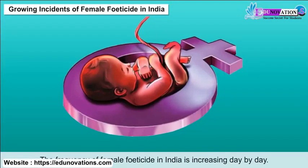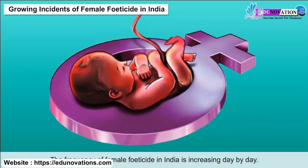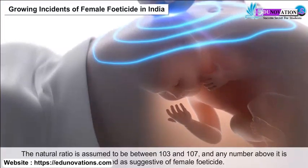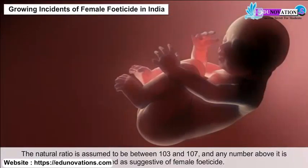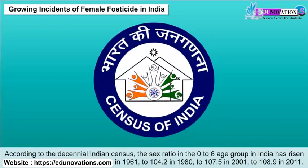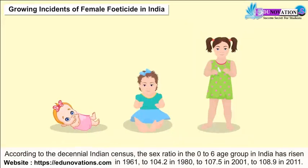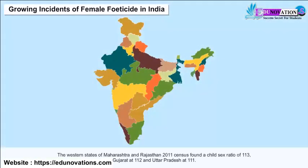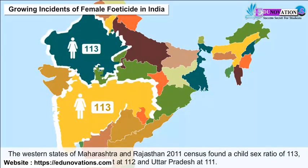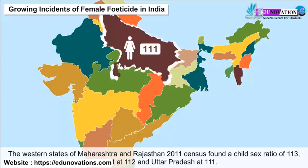Women's Health in India – Growing Incidence of Female Feticide: The frequency of female feticide in India is increasing day by day. The natural sex ratio is assumed to be between 103 and 107, and any number above it is considered suggestive of female feticide. According to the decennial Indian census, the sex ratio in the 0 to 6 age group has risen from 102.4 males per 100 females in 1961 to 104.2 in 1980, 107.5 in 2001, and 108.9 in 2011. The Western states of Maharashtra and Rajasthan recorded a child sex ratio of 113, Gujarat at 112, and Uttar Pradesh at 111.